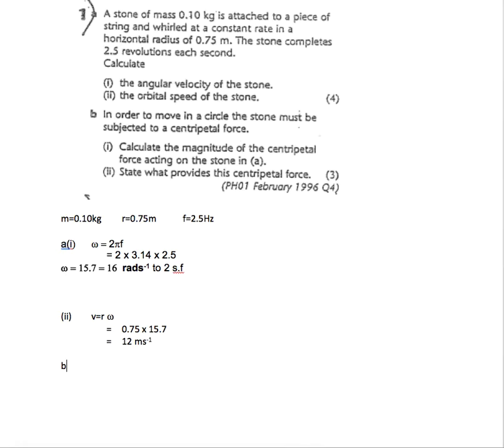Okay then we've got part B(i), which says in order to move in a circle the stone must be subjected to a centripetal force. Calculate the magnitude of that centripetal force. Well we've got everything, we've got m, v, omega, everything.